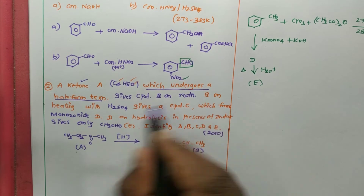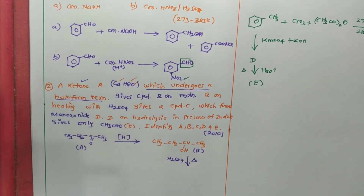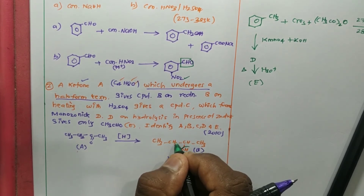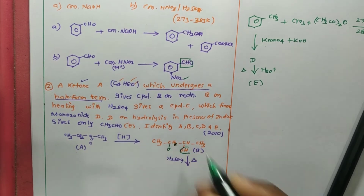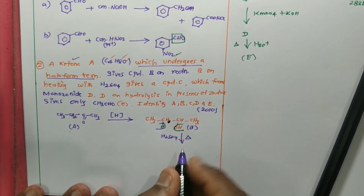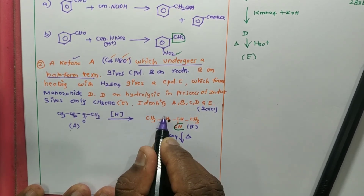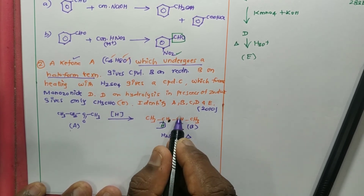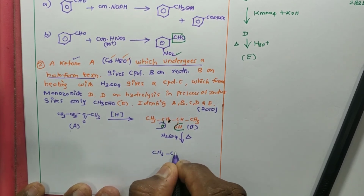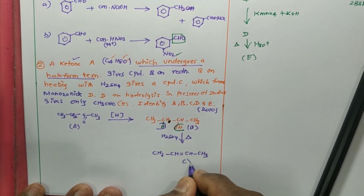The most important thing: B on heating with sulfuric acid — if you heat with H2SO4, what product will I get? This is a dehydration reaction. The OH and H are eliminated as water, and a double bond is formed. So I will be getting product C: CH3-CH=CH-CH3, which is 2-butene. This water molecule is eliminated as the dehydration product.